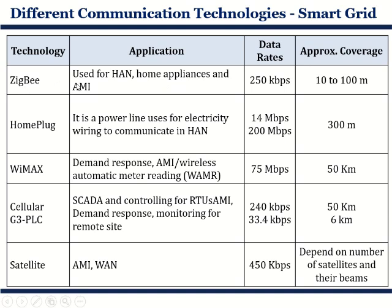Different technologies have different data transfer rates. For example, Zigbee has a data transfer rate of 250 kbps and covers approximately 10 to 100 meters. Because its range is very less, Zigbee is more useful in home appliances or a Home Area Network. On the other hand, satellite technology can cover very large distances. All technologies have certain limitations in distance and data transfer rate, and based on that, their application is decided.